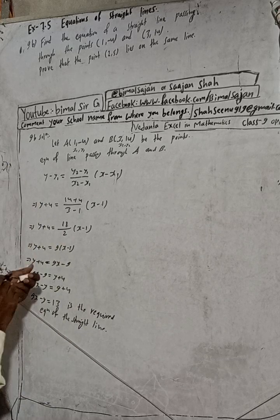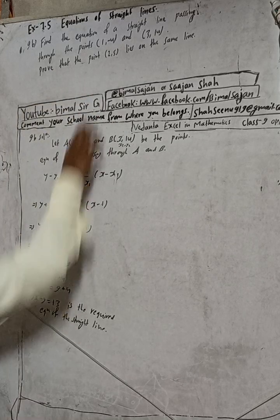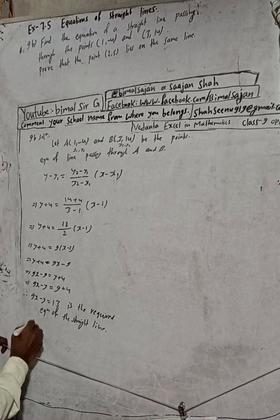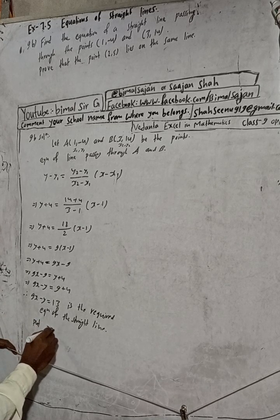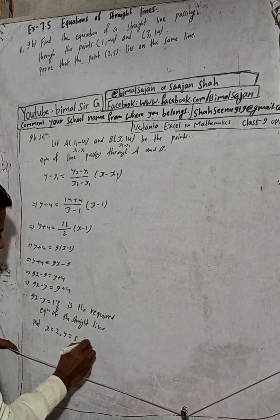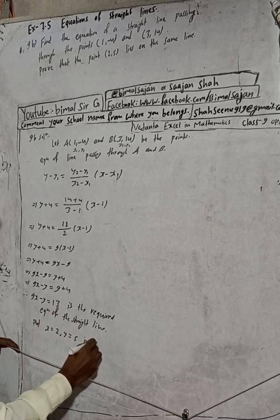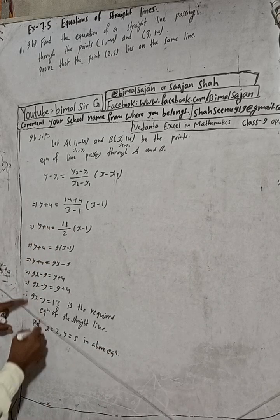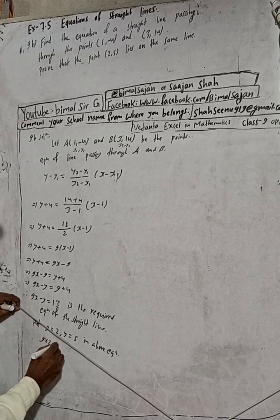Now the second part of the question is to prove that the point (2, 5) lies on this line. To prove this, we substitute x equals 2 and y equals 5 into our equation 9x minus y equals 13.